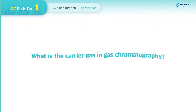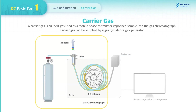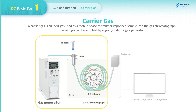Let's look into GC Carrier Gas in detail. What is the Carrier Gas in Gas Chromatography? The Carrier Gas is an inert gas used as a mobile phase to transport the vaporized sample into the column. Carrier Gas can be supplied by a gas cylinder or a gas generator.